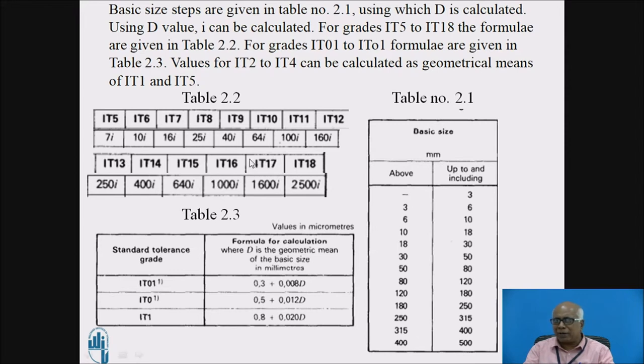Now this is for IT5 to IT18. For grades which are lower than IT5, there are different formulae. Table 2.3 gives the formulae for IT01, IT0 and IT1. The formulae are like 0.3 plus 0.008 D. For IT2 to 4, this can be calculated as geometrical means of IT1 and IT5. For IT3, IT3 will be root of IT1 multiplied by root of IT5. Once we get IT3, then IT2 can be calculated from IT1 and IT3 as its geometric mean. For IT4 calculation, we shall take IT3 and IT5 values and calculate its geometric mean.